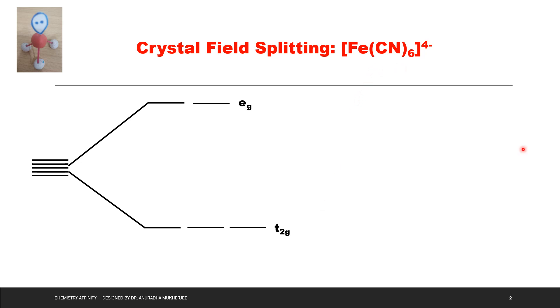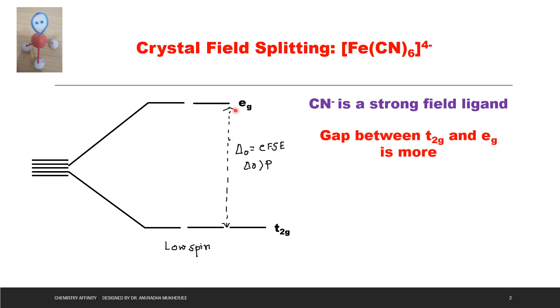In Fe(CN)6 4-, CN- is a strong field ligand. That's why the gap between T2G and EG is more. So we can say CFSE is greater than pairing energy, and that is the reason low spin complex forms. That means we are getting T2G6 and EG0.